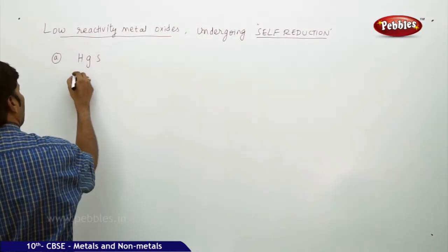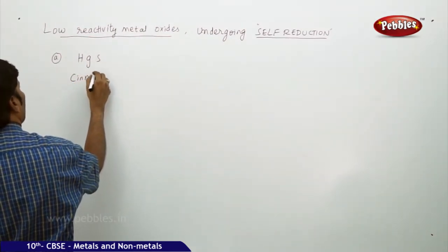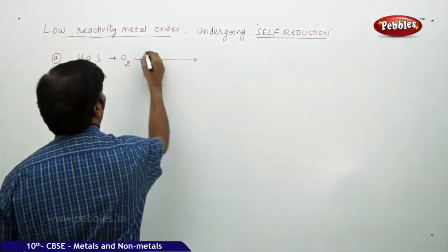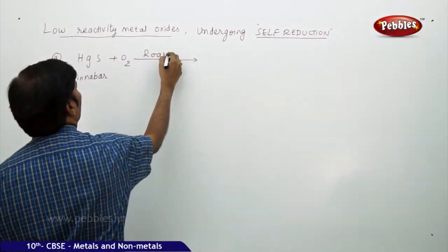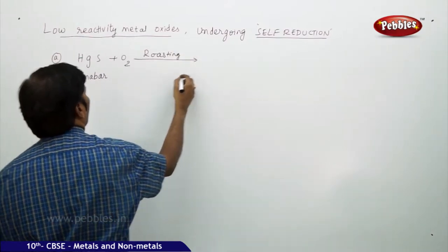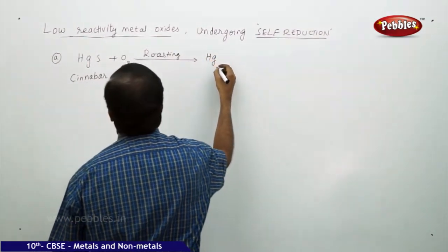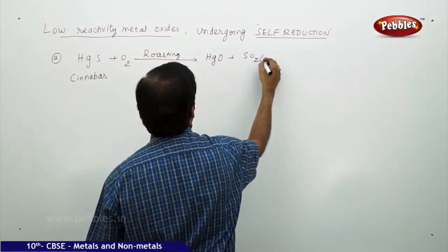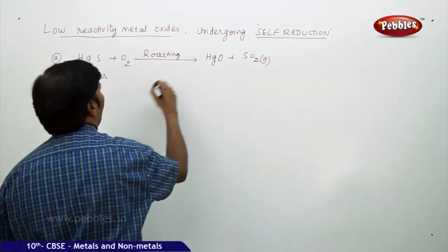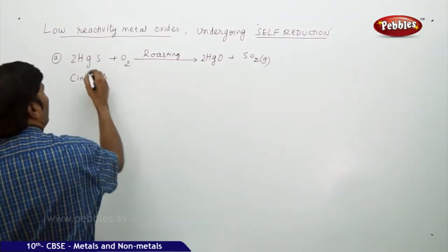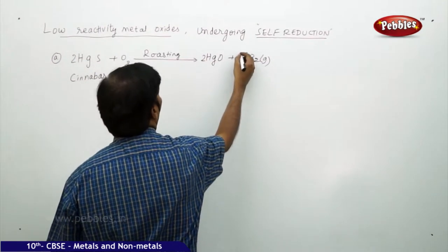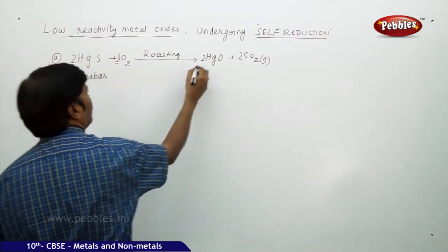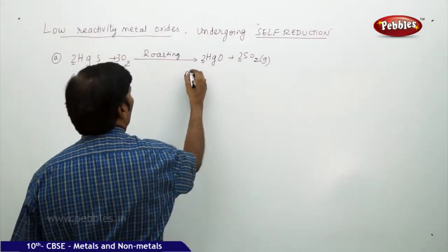take HgS (cinnabar) subjected to roasting at high temperature. It gives mercury oxide (HgO) plus sulfur dioxide gas. To balance the equation, take 2 on the HgS side, 2 on the HgO side, and 3 on the SO₂ side.